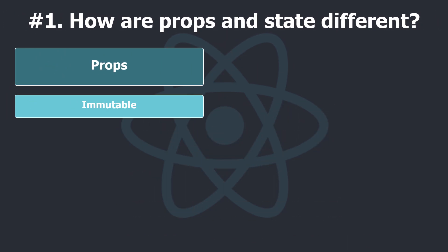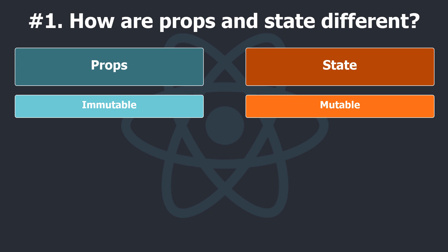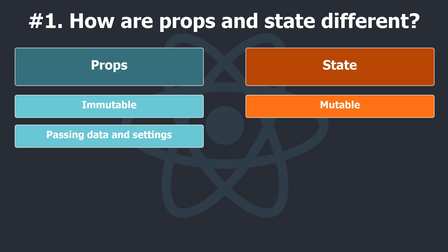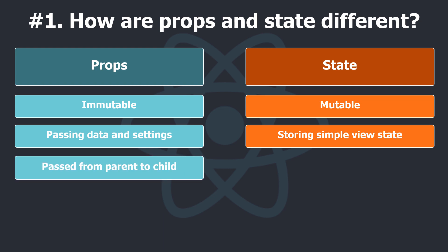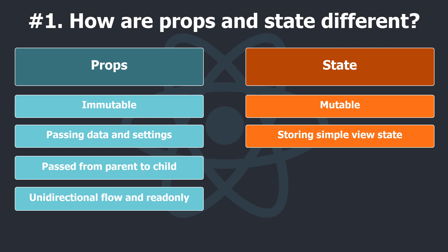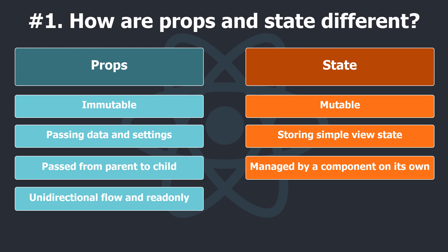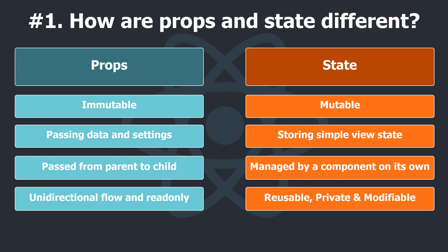Props are immutable and are set by the parent, and they are fixed throughout the lifetime of a component. State is mutable, meaning that state can be updated in the future while props can't. Props are used for passing data and settings through the component tree, while state is used for storing simple view state like whether or not drop-down options are visible. Props are passed from parent to child — it's a unidirectional flow and read-only for the child component. State is managed by a component on its own; it's reusable, private to the component, and modifiable.